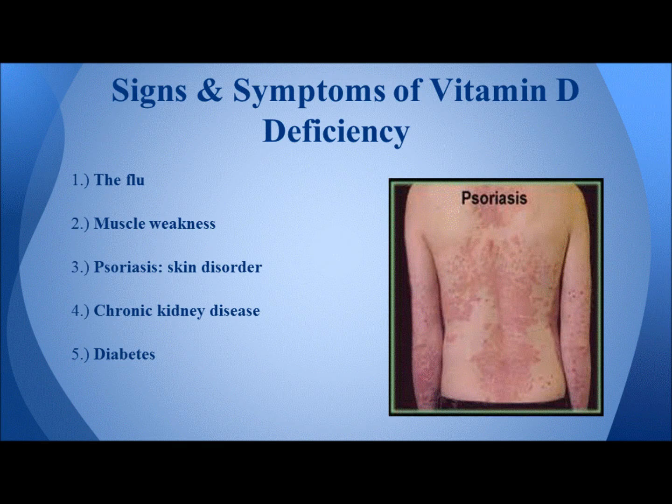Now we'll present some of the signs and symptoms of vitamin D deficiency. The first symptom is the flu, which mostly affects children and must affect them repeatedly. As well as muscle weakness and psoriasis, which is shown in the picture. After that, chronic kidney disease and diabetes type 1 more than type 2.